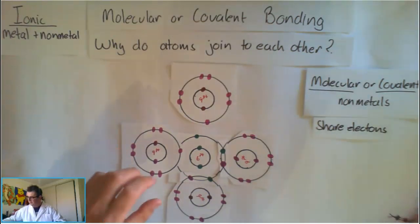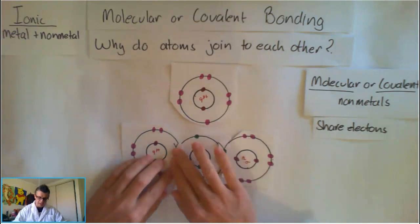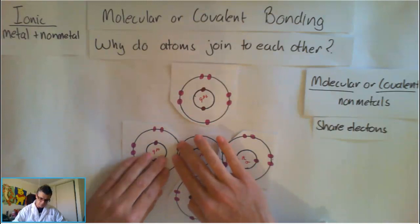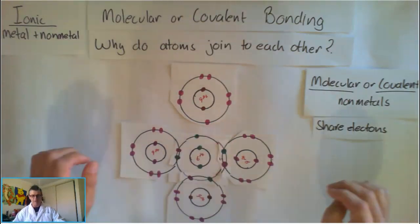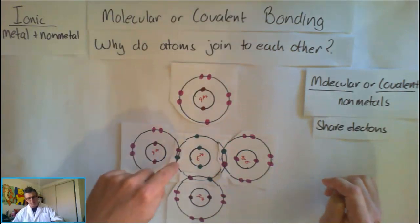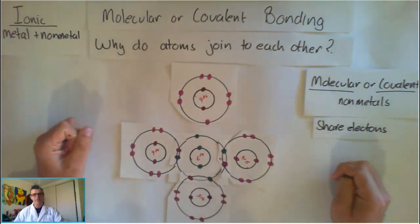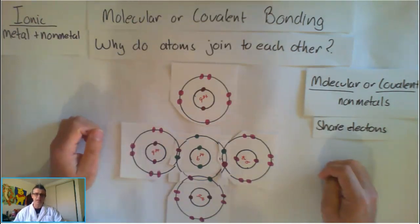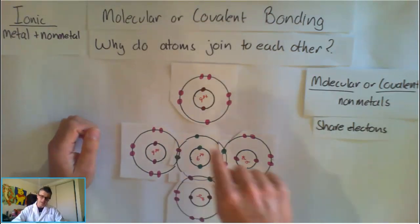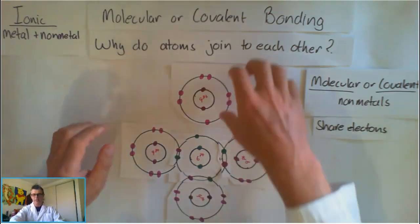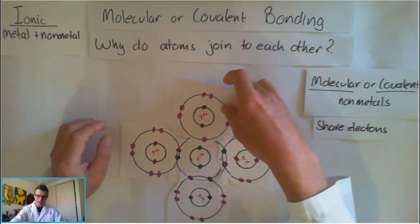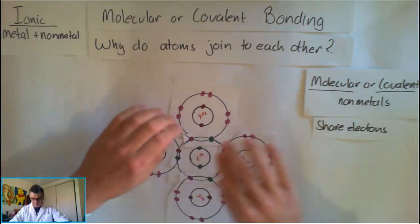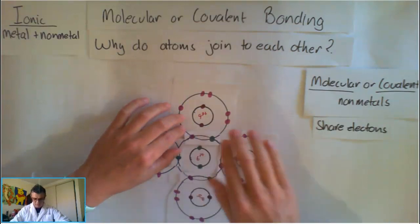We're going to bring that third fluorine in, and again they're going to share their electrons. So again, that fluorine now has eight in its valency shell - fluorine's happy. But carbon, however, still only got seven, still not happy. So he's going to attract another fluorine atom. The fourth fluorine atom is going to join up.